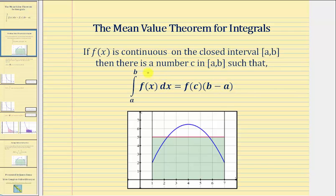So the value of this definite integral is equal to some function value over the interval from a to b, times the quantity b minus a, which is the width of the interval. To better understand this, let's think of this in terms of area, and we'll assume f of x is non-negative over the closed interval.